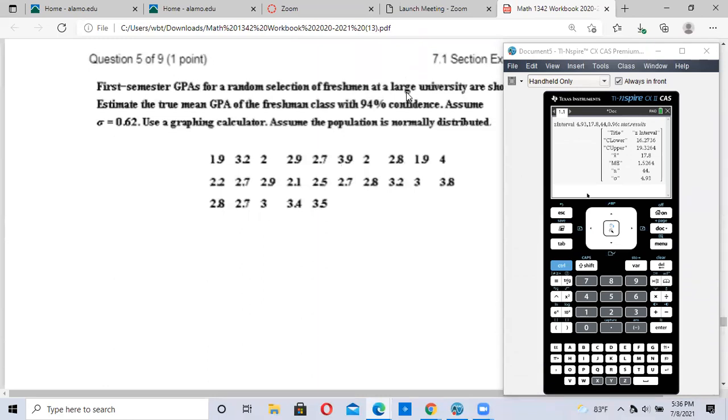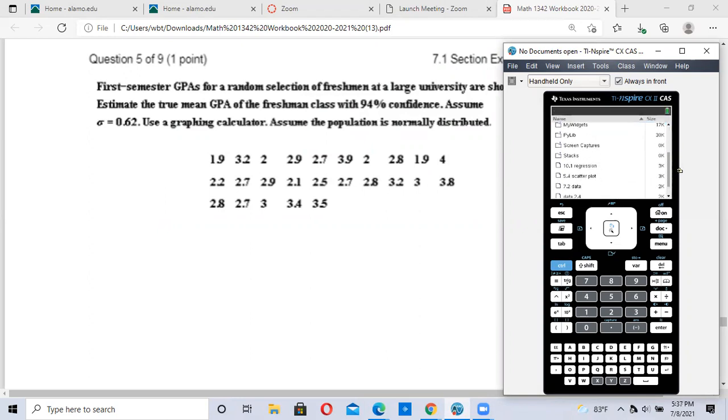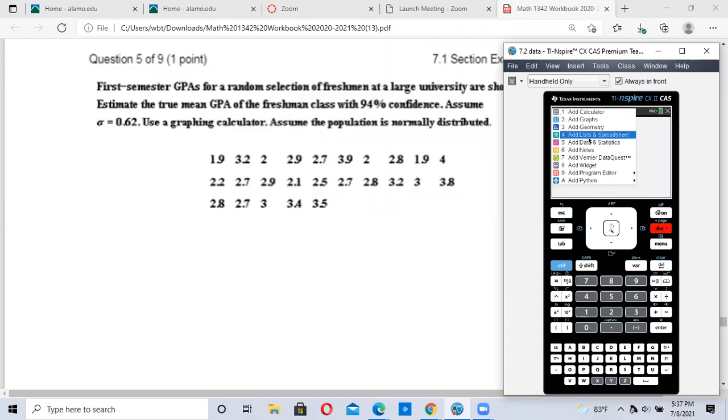This one has the data. We have to input this data. I've already done that - I'm calling it 7.2 data and have it saved here. If you don't have the data saved like me, you're going to have to hit a new page, add list and spreadsheet, and type in your data. You change the column to L1 and type in all your data. There are 25 pieces of data.